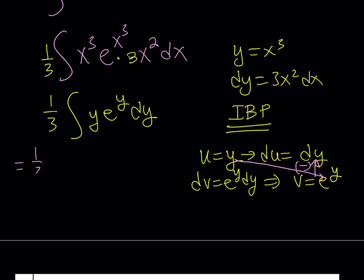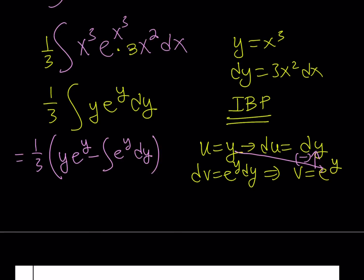This is going to equal one third of u times v. U times v is y times e to the power y minus the integral of v times du which is e to the power y dy. The integral of e to the power y is fairly simple. This gives us 1 over 3 y e to the power y minus e to the power y. And at the end, we add our constant. Otherwise, we're going to lose points.